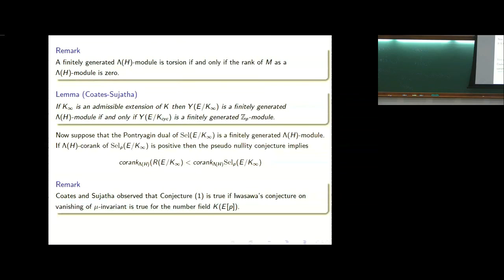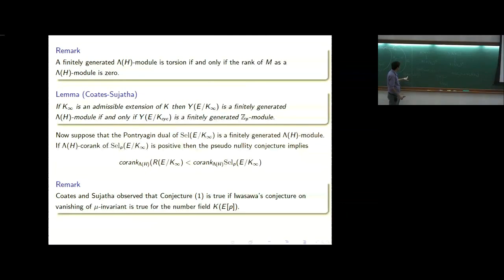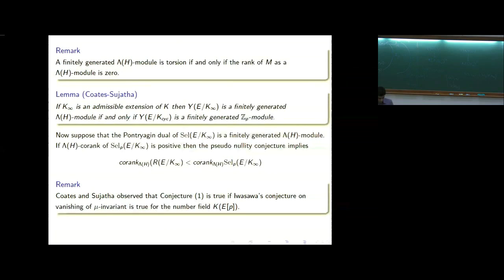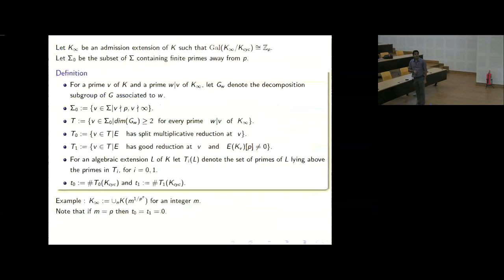Another situation is the Kummer extension: you have Q(μ_P), and then adjoin μ_{P^n} and P^n-th roots of some integer m, and take the limit over all n. These are again admissible p-adic Lie extensions of dimension two. There are several examples, but all in the ordinary case. We will explain how, in the ordinary case, this has been proved.